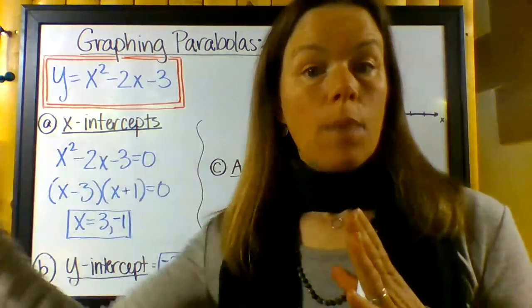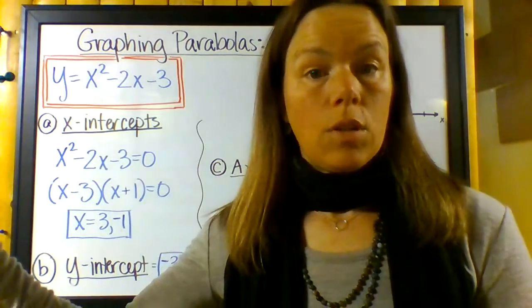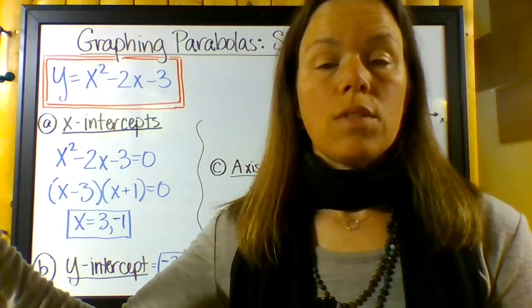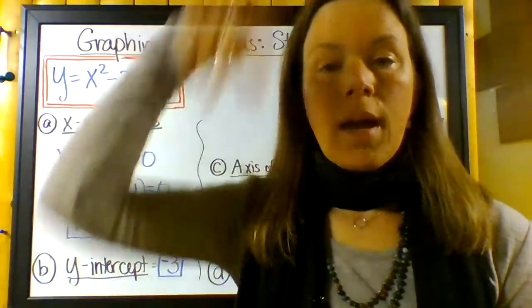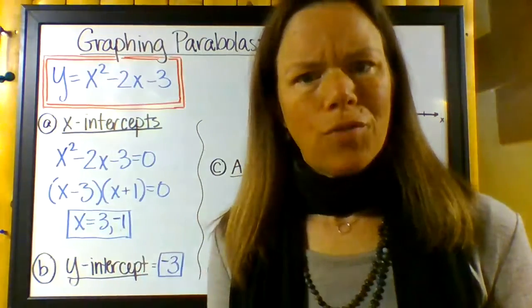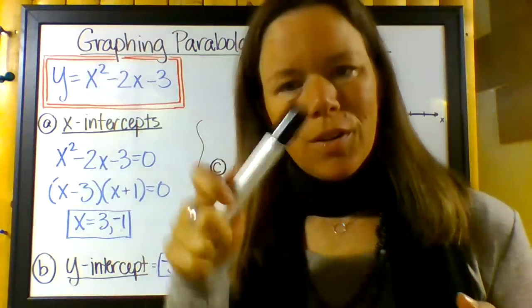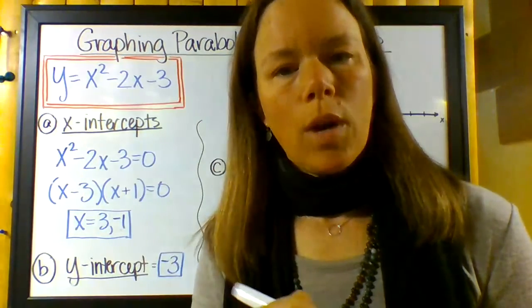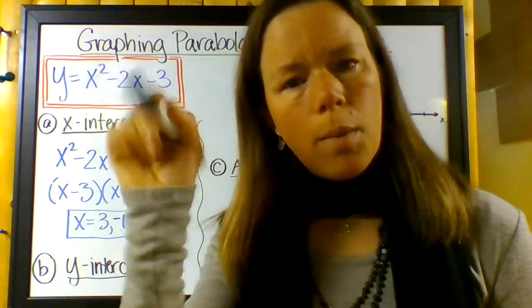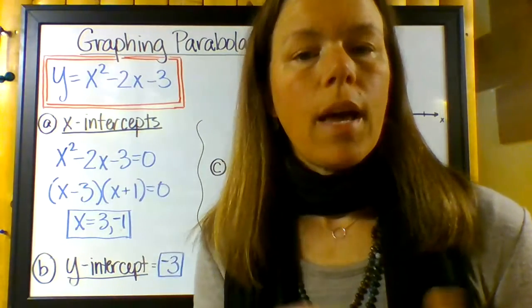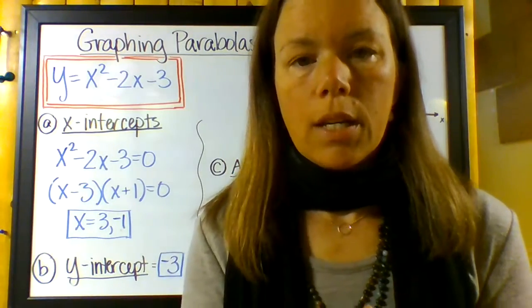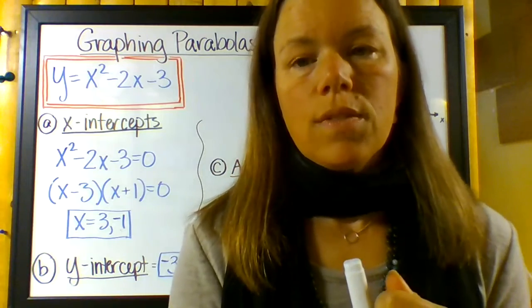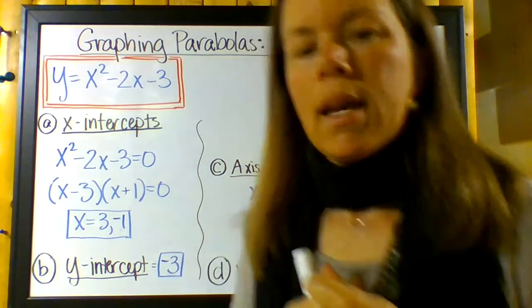I mean, what if a parabola doesn't come close to where x equals zero, except way, way high up and you start plugging it in and you get a hundred, right? It'd be hard to figure out where that parabola goes on a graph without some other methods than just plugging in random values that you choose.